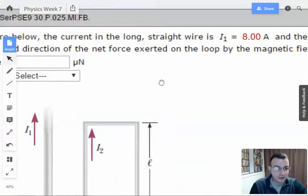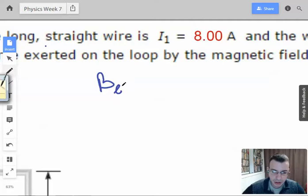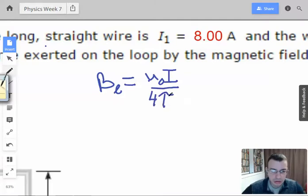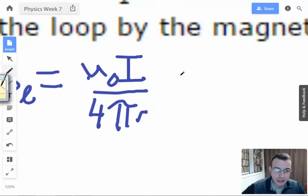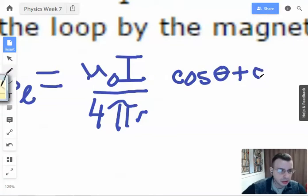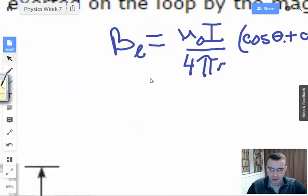So start by finding the magnetic field due to an infinite wire. The equation we use for the magnetic field due to a wire is magnetic field, I'll call this L for line, equals μ₀I over 4πr, times cosine of θ₁ plus cosine of θ₂. Zoom in slightly. This guy is going to be 1, this guy is going to be 2.